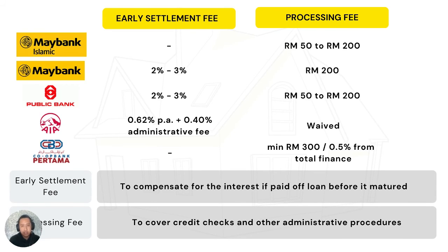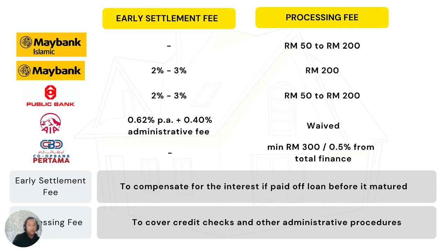The early settlement fee compensates for interest if the loan is paid off before it matures. Maybank Islamic and Bank Pertama do not have this fee, whereas Maybank charges 2%, Public Bank charges 3%, and AIA charges 0.62% per annum plus a 0.4% administrative fee. The processing fee covers credit checks and other administrative proceedings. Maybank Islamic and Public Bank charge the same processing fee ranging from 50 to 200 ringgit, Maybank charges 200 ringgit, and Bank Pertama charges a minimum of 300 ringgit or 0.5% of the total finance amount.